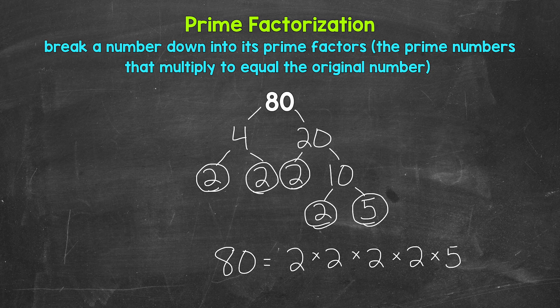If we have the correct prime numbers, they will multiply to equal our original number. So let's check: 2 times 2 is 4, times 2 is 8, times 2 is 16, times 5 is 80. So we are correct here.